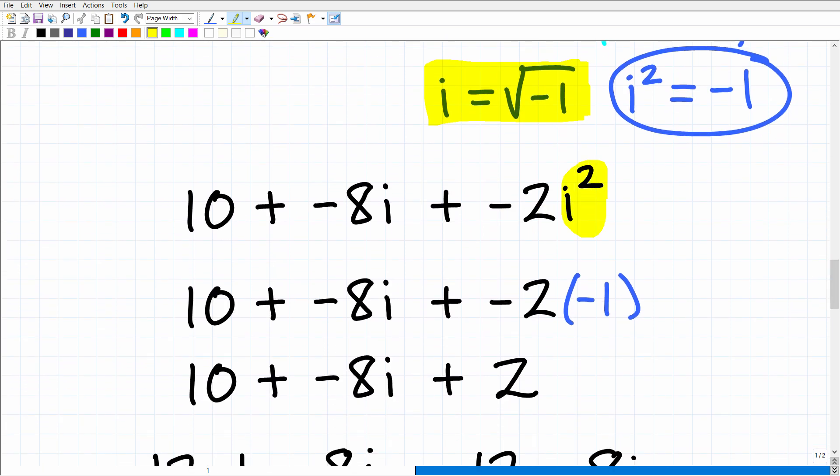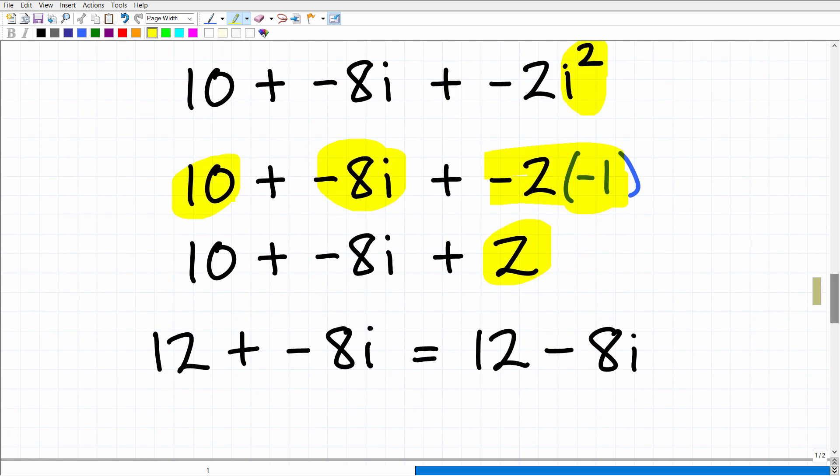So now that gives us 10 plus negative 8i plus negative two times negative one, which is a positive two. And now we can just clean this up. So we have 10 plus negative 8i plus 2. 10 and 2 is 12 plus negative 8i. So this is perfectly fine as an answer. Or you could write it this way, 12 minus 8i.